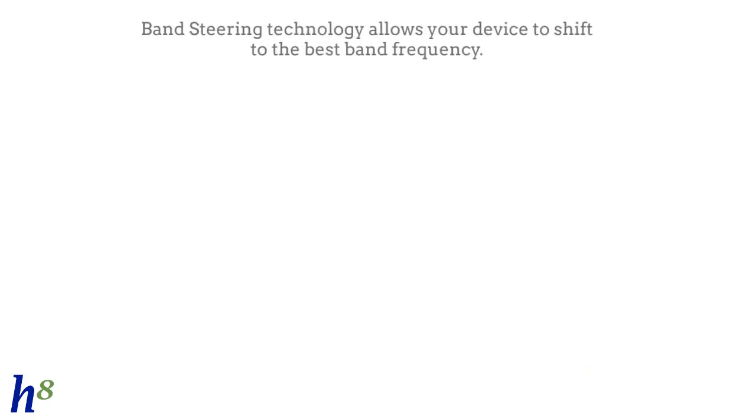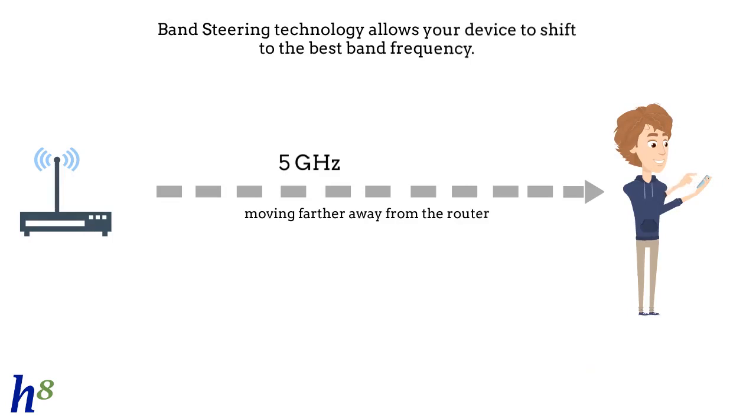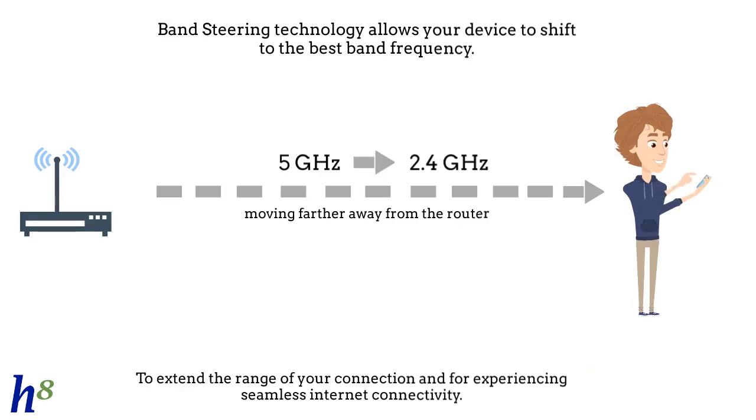As you move throughout your house, Band Steering technology allows your device to shift to the best band frequency. For example, while browsing on your phone if you are moving farther away from the router, your phone will switch from 5 GHz to 2.4 GHz to extend the range of your connection and experience seamless internet connectivity.